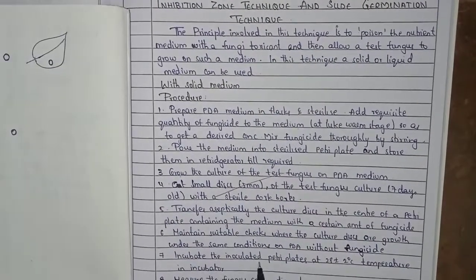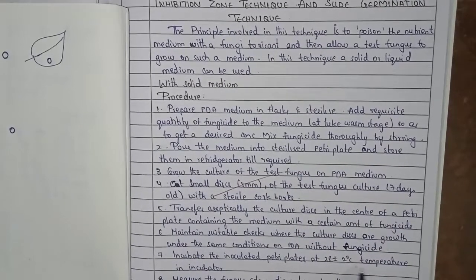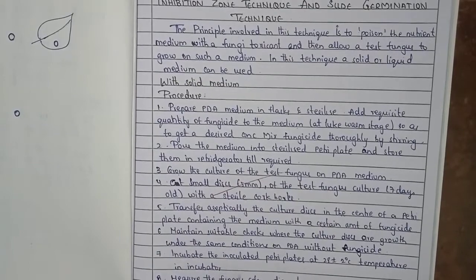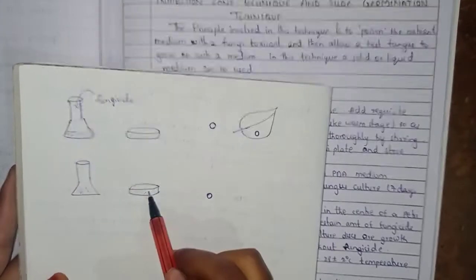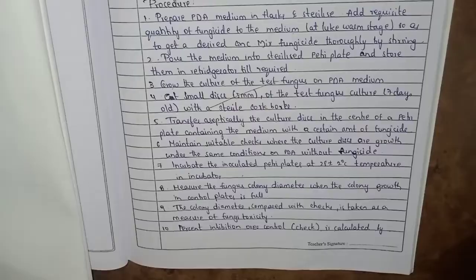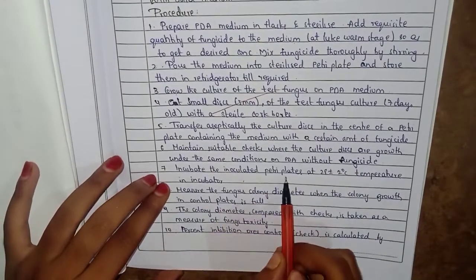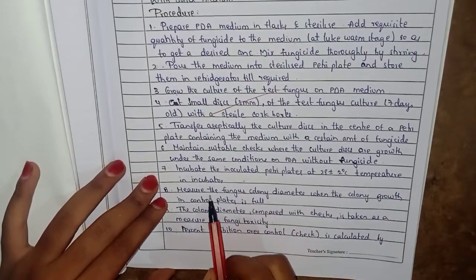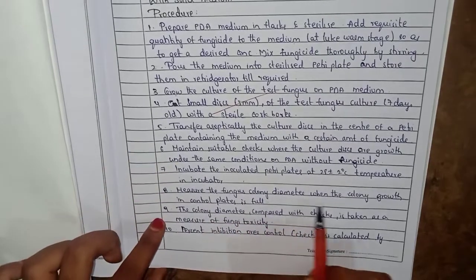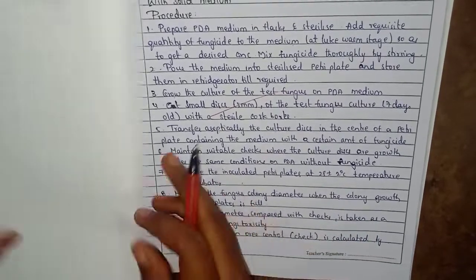Incubate the inoculated petri plates at 28 plus or minus 2 degrees Celsius in an incubator.